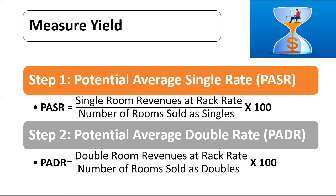Step two: Potential Average Double Rate (PADR) — it is the ratio of double occupancy room revenue to the total number of rooms. It can be calculated as double rooms revenue at rack rate upon number of rooms sold as doubles, multiplied by 100.